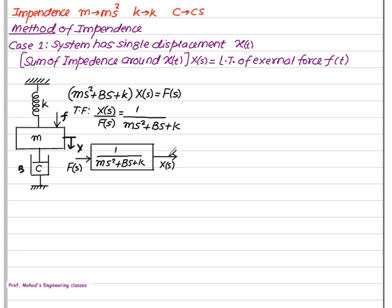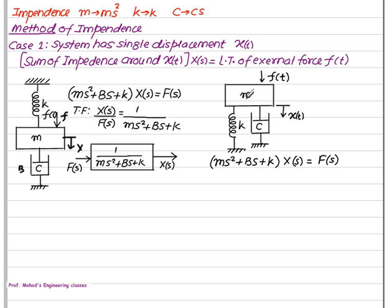We can represent it as: F(s) × [1/(ms² + bs + k)] = X(s). For another system where mass m is supported from below by spring k and damper c, if force f(t) is applied, the mass is displaced downward by x(t). Spring and damper each require two displacements — one is x(t) and the other is ground. Using the same definition: (ms² + k + bs) × X(s) = F(s), giving almost the same result.